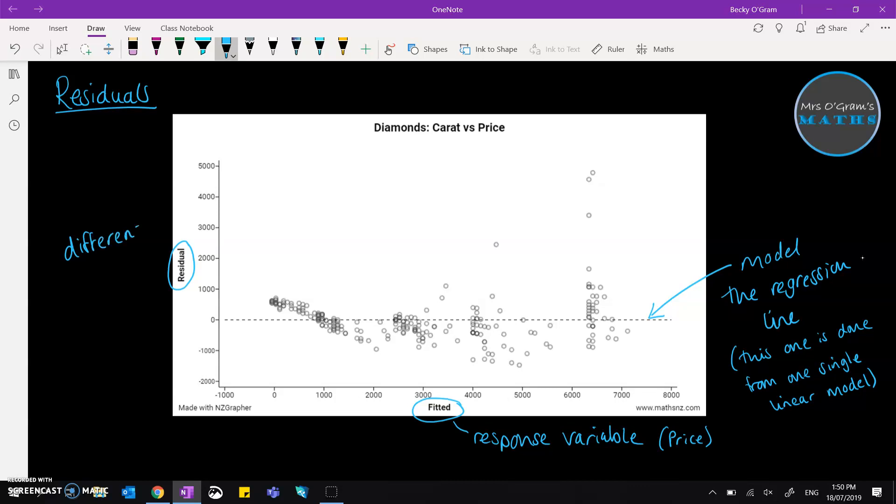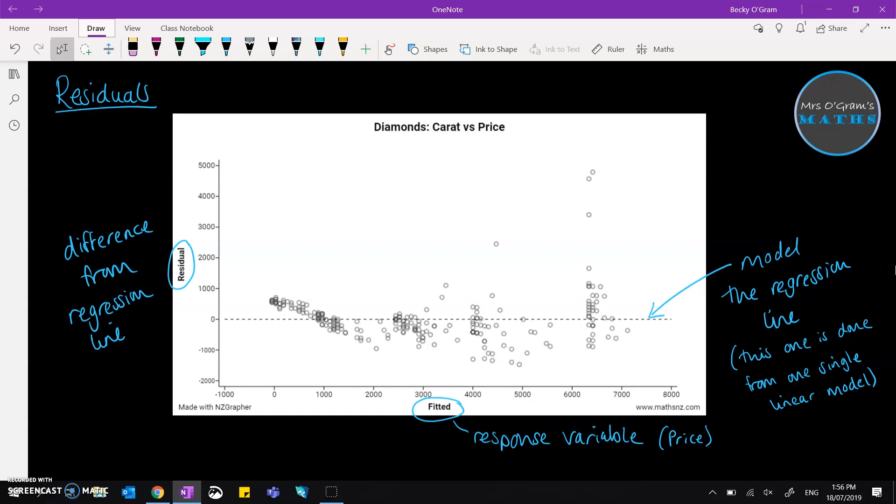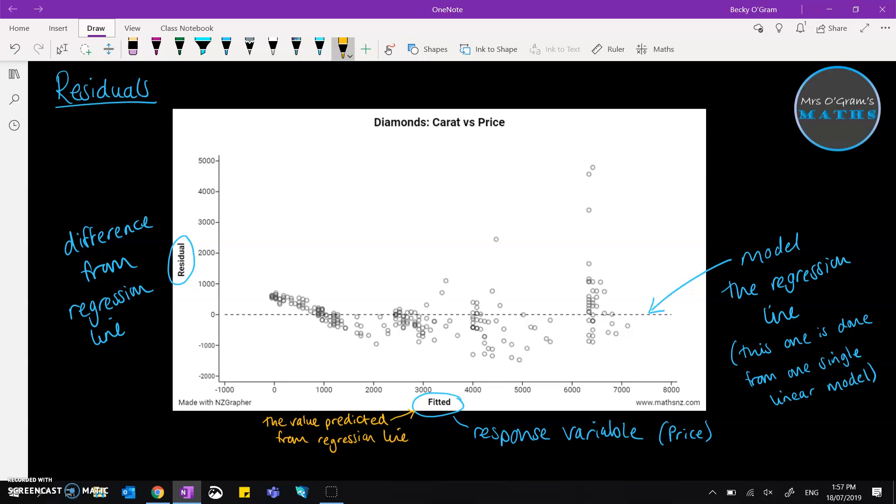One thing to notice about how these actually get plotted is that your fitted value is taken from the value that would be predicted from the regression line. So you'll notice, for example, we have some dots at zero just here.